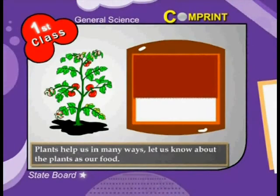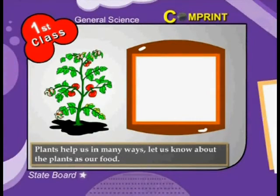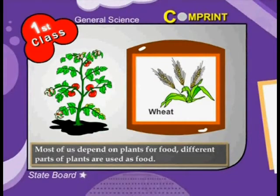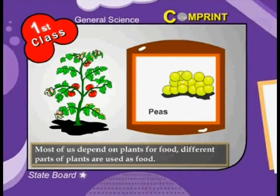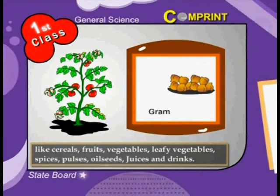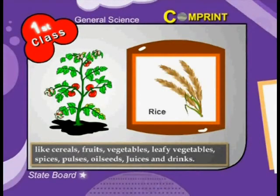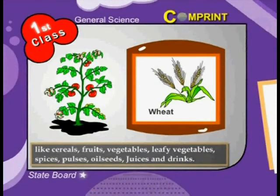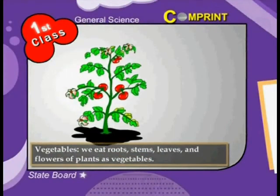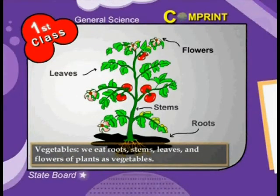Plants help us in many ways. Let us know about plants as our food. Most of us depend on plants for food. Different parts of plants are used as food, like cereals, fruits, vegetables, leafy vegetables, spices, pulses, oil seeds, juices, and drinks.